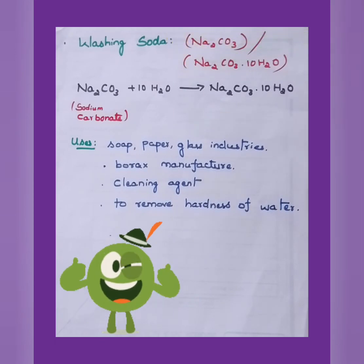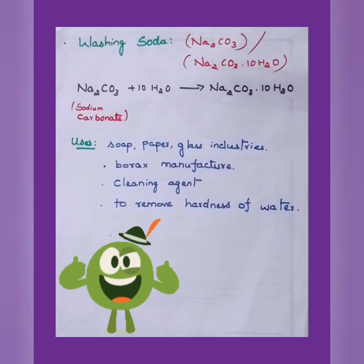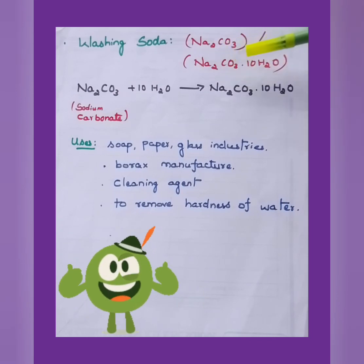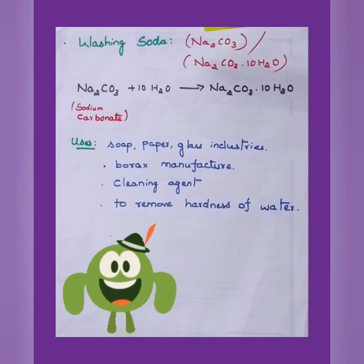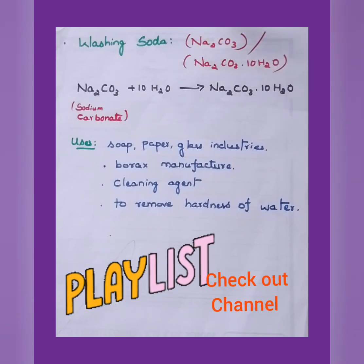Next, another chemical that can be obtained from sodium chloride is washing soda, Na2CO3. This is how it is represented, chemical formula, and Na2CO3·10H2O also we represent. What is this Na2CO3? Just now we learned that sodium carbonate it is, which is obtained from baking soda. From sodium hydrogen carbonate, when it is heated, we obtain Na2CO3. This Na2CO3 plus 10H2O gives Na2CO3·10H2O. That's how we obtain washing soda.